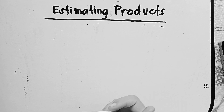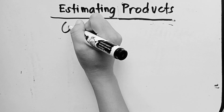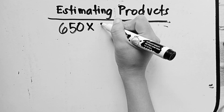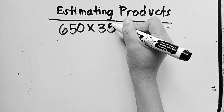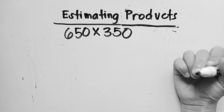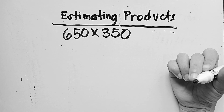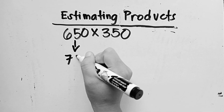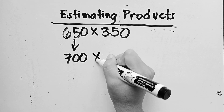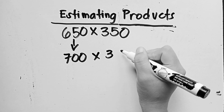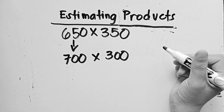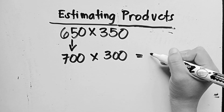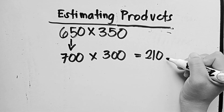The next example will be 650 times 350. Rounding to the nearest hundred, we'll get 700 multiplied by 300. If we multiply both, we'll get 200,000.